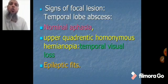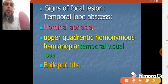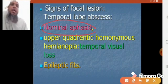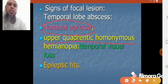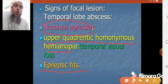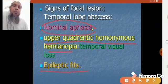The signs of focal lesion: when the temporal lobe is affected, in case of temporal lobe abscess, sign number 1 is nominal aphasia — the patient fails to tell the name of a common object but can show its function. Number 2 is upper quadrant homonymous hemianopia — the patient loses the temporal visual field. Number 3 is epileptic fit, which causes temporary hallucination of taste and smell, and abnormal smacking movements of the lips and tongue.